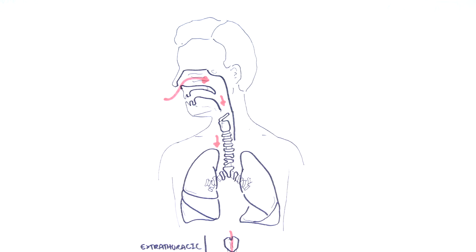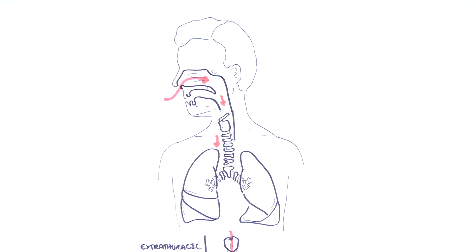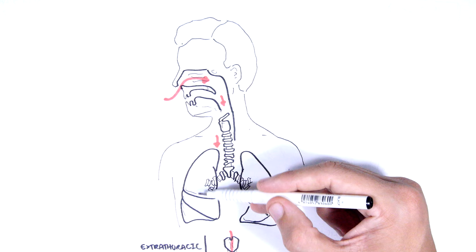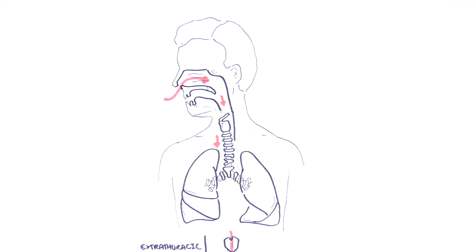The causes of stridor can be divided into anatomical regions. Extrathoracic region, which is anywhere from the nose to the larynx and the trachea, and intrathoracic region, which includes the distal trachea and the bronchi.